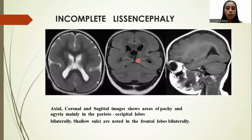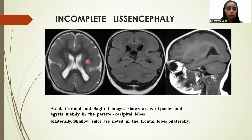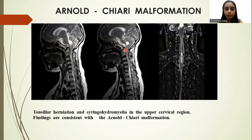In incomplete lissencephaly, these are axial, coronal, and sagittal images in which we can see areas of patchy agyria mainly in the parietal-occipital lobe bilaterally, and shallow sulci noted in the frontal lobes bilaterally.